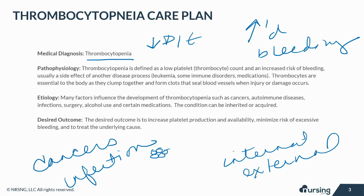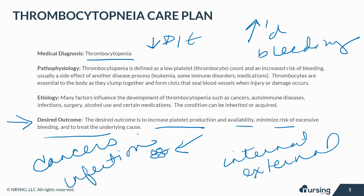The condition can be inherited or acquired. Generally, a low platelet count develops when the bone marrow fails to produce enough thrombocytes, or the bone marrow makes enough but the body destroys them or uses them too quickly, or when the spleen holds on to too many platelets. The desired outcome is to increase platelet production and availability, minimize the risk of excessive bleeding, and to treat the underlying cause.